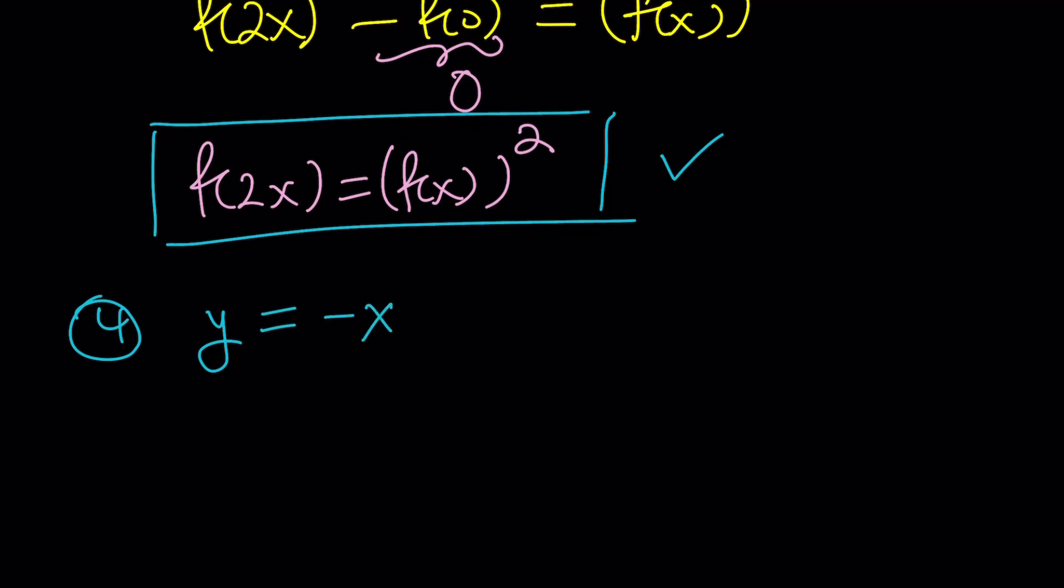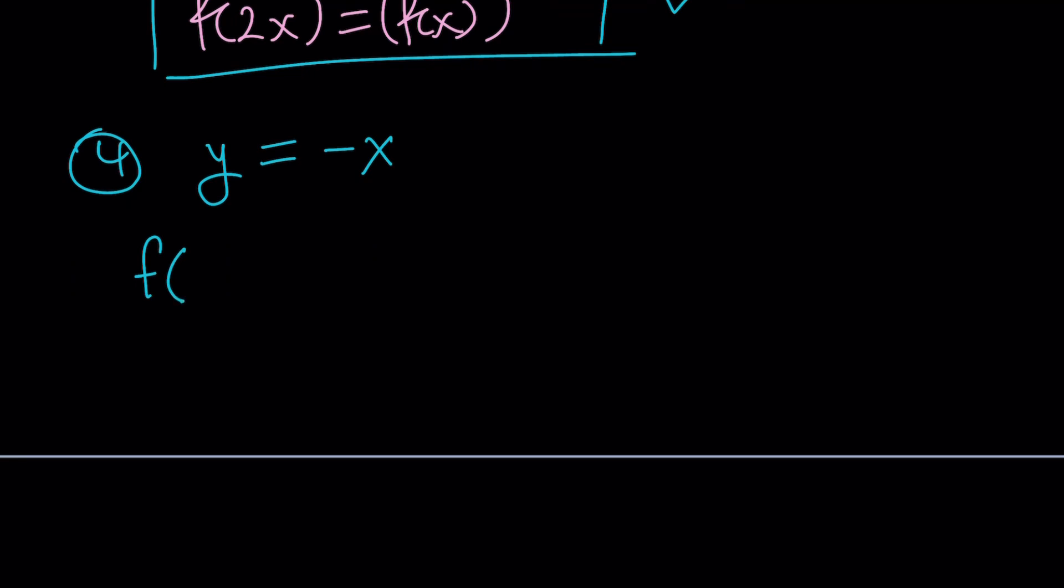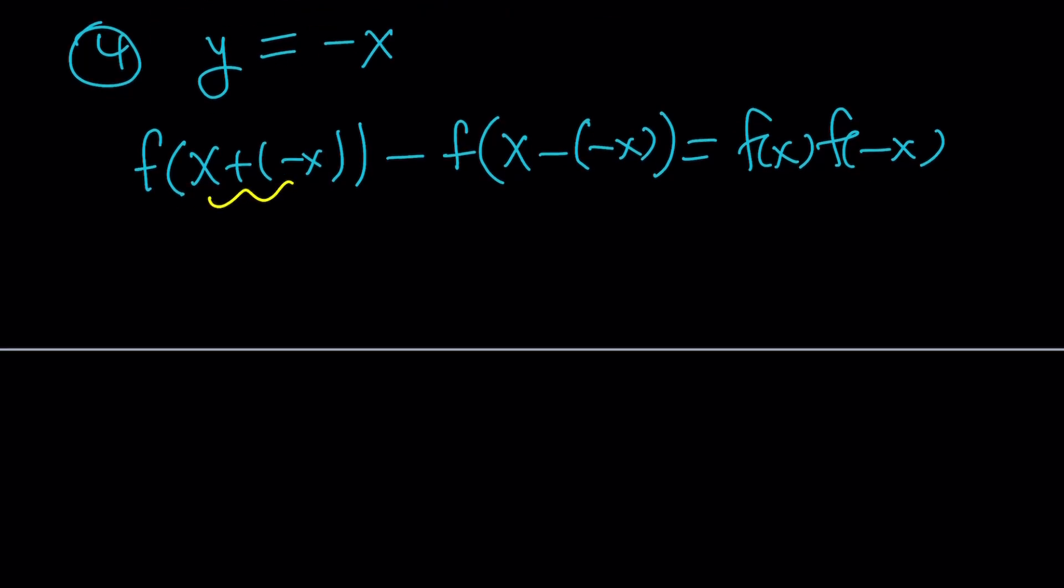And guess what that's going to give us? f of x plus y, x plus negative x minus f of x minus negative x equals f of x times f of negative x. Remember, the right-hand side is f of x times f of y. Again, everything is in terms of x, but let's simplify it. This is going to be 0. This is going to be double negation to x. So we get f of 0 minus, pay attention to the sign, f of 2x equals f of x times f of negative x.